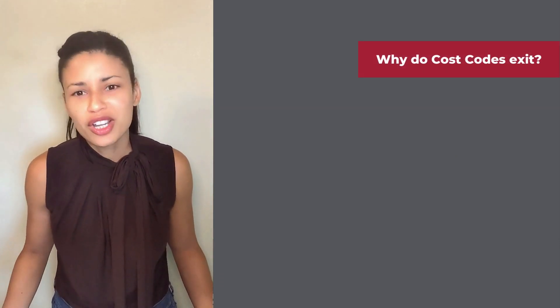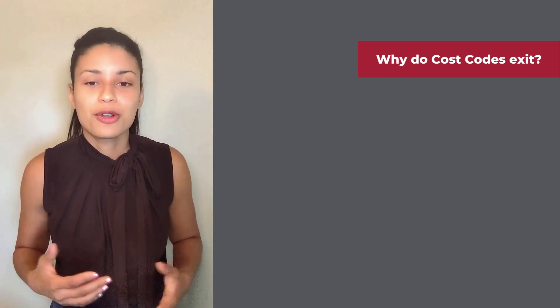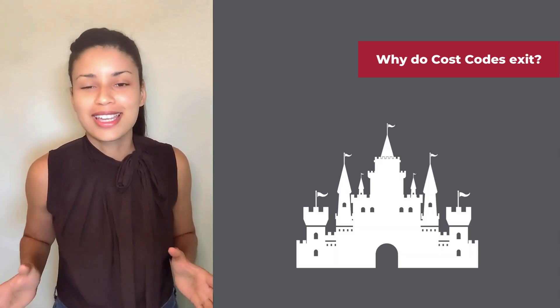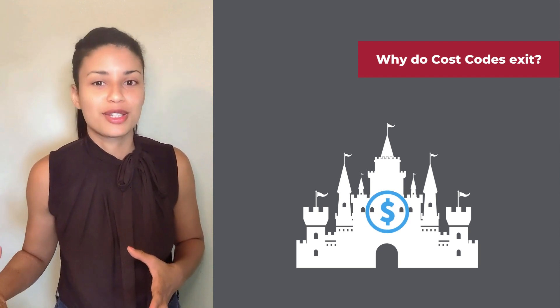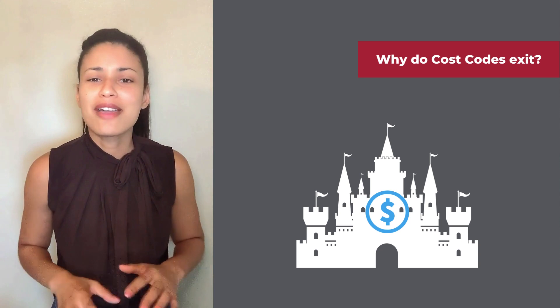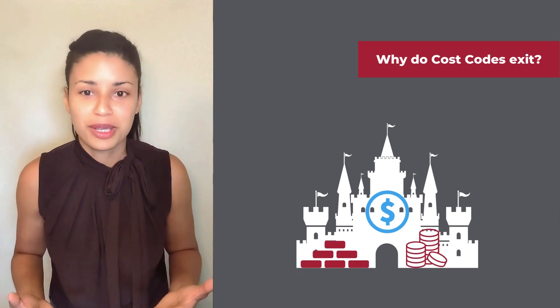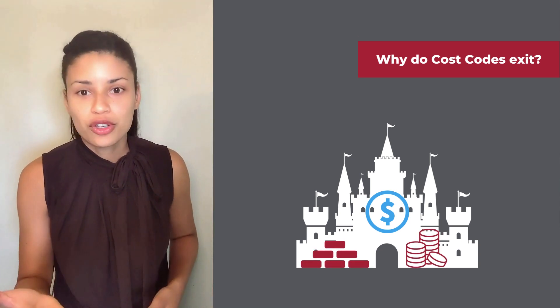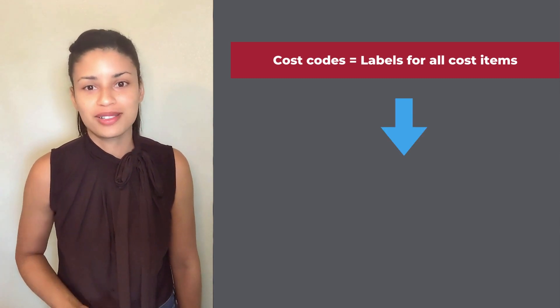A simple way to explain why cost codes even exist: imagine that you're building a grand castle and you have a set budget for building that castle. You need to track how much money you're spending on every brick, stone, and ounce of gold being put into this castle. That's where construction cost codes come in — they're like magical labels being put on every single scope of work of the project.